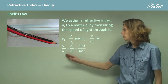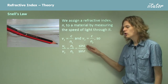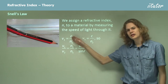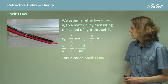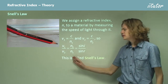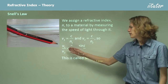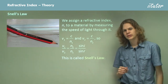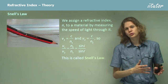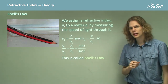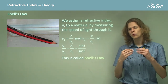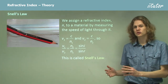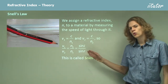We also know that V1/V2 equals the sine of the incident angle over the sine of the refracted angle. This relation between the refractive indices, the speed of light, and the angles of refraction is called Snell's Law. It's very handy when trying to measure or predict angles of refraction, or when trying to determine the refractive index of a material by measuring the speed of light through it or the angle of refraction.